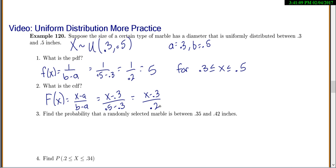So number three, let's find the probability that a randomly selected marble is between 0.35 and 0.42 inches. So you could do this with the PDF, but it's actually easier if you just use the CDF. Because if you want the probability that x is between 0.35 and 0.42, all you have to do is plug in that top number to your CDF, and then subtract what you get when you plug in the bottom number.